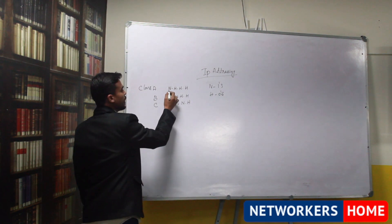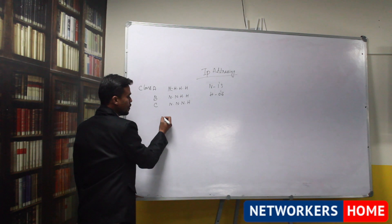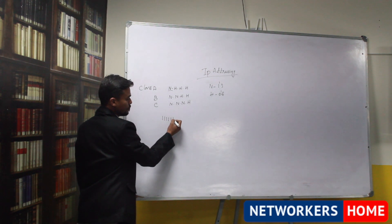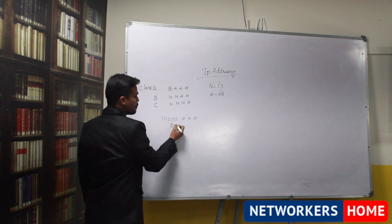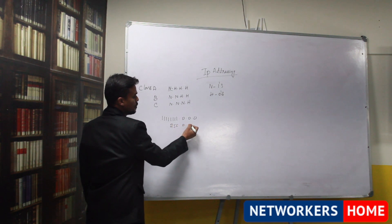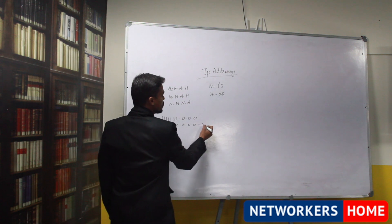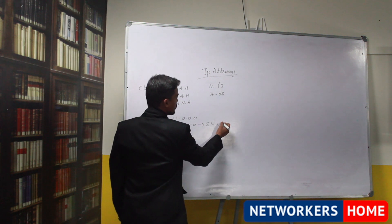So here we have totally eight bits in class A. So you turn on eight bits. Based on binary to decimal conversion formula the value will be 255.0.0.0. So this is the subnet mask for class A.